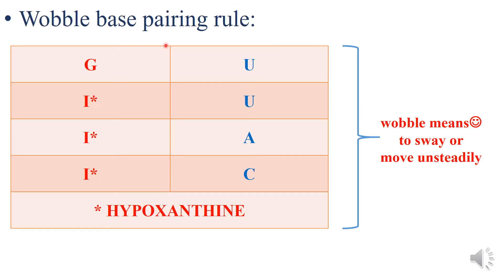The wobble base pairing rules are: guanine binds to uracil; inosine binds to uracil; inosine can also bind to adenine; and inosine can also bind to cytosine. These are the four common wobble base pairs that are seen. Inosine is nothing but the nucleotide form of hypoxanthine.